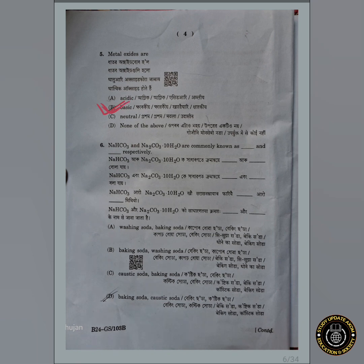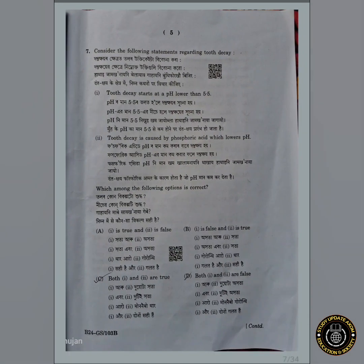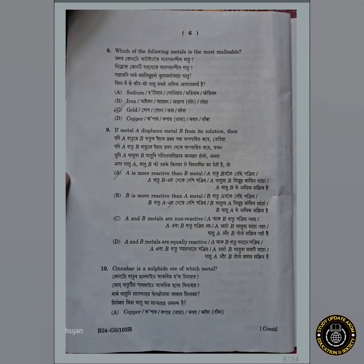Question number six: your answer is baking soda and washing soda — baking soda. Question number seven: option A is correct, meaning one two hood, the V2 false. Question number eight: your answer is gold, option C is correct.